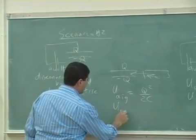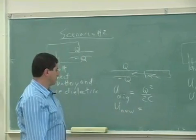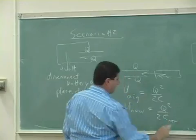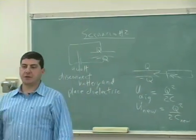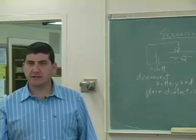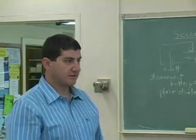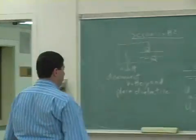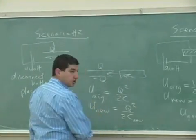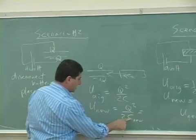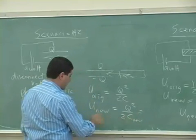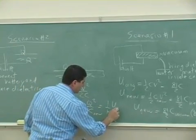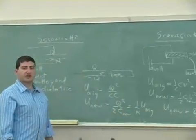And then potentially, U nu is going to equal what? Well, the charge is going to be the same, and the capacitance nu is what? It's larger by a factor of kappa. All right, so the potential energy, then what is it? Since C nu is larger by a factor of kappa, the potential energy nu is smaller than the potential energy original by a factor of kappa.